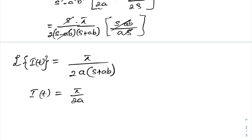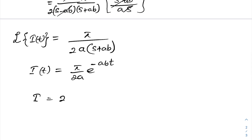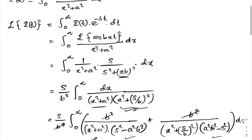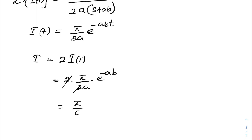Taking the inverse Laplace transform, we know I(t) is equal to π over (2a) times e^(−abt). Since our original integral I equals 2 times I(t) evaluated at t = 1, we have I = 2 times π/(2a) · e^(−ab), and the 2's cancel, giving the final answer: π/a · e^(−ab). If you like this type of video, please subscribe to the channel. Thank you for watching.